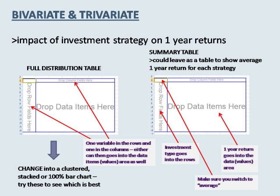Put investment type into the rows area and one year return into the values area, then change the field settings so that you calculate an average rather than a count. The answers will initially be in decimal format but these can be switched to percentage by changing the number format. Use these averages from each type to see if any differences exist — such as whether some have higher or lower average returns — and then expand on this by looking at the more full distribution chart. You should discuss the trends and your conclusion about whether investment type has had an impact using specific examples, and consider whether low or high averages are linked to the risk level for each type.